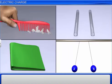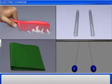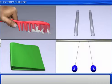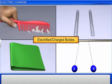From previous examples, bodies like combs, glass rods, silk cloth pieces, pith balls, etc. are said to be electrified or are called charged bodies.